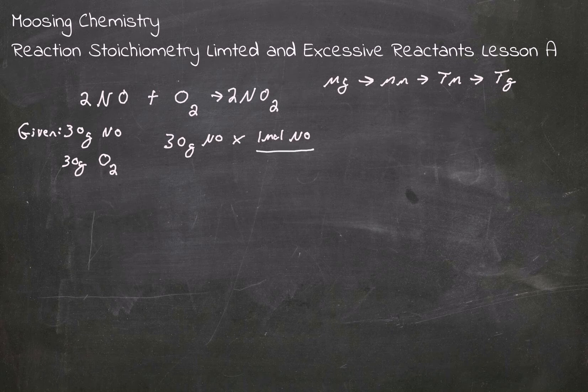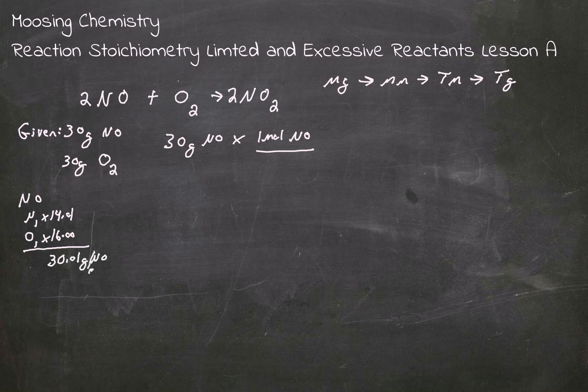All right, so now we need to know the molar mass of NO. So N is 1 times 14.01. O is 1 times 16.00. We get these numbers from the periodic table. This gives me 30.01 grams per mole of NO. All right, so we got 30.01 grams of NO.